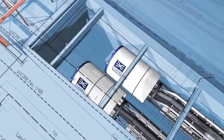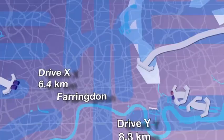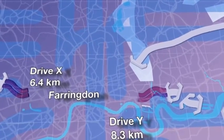Crossrail's first pair of TBMs, Phyllis and Ada, will construct Drive X, traveling from Royal Oak to Farringdon.